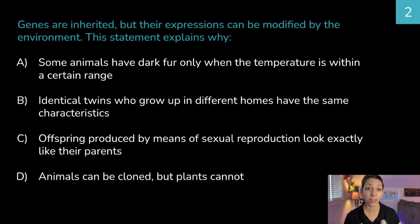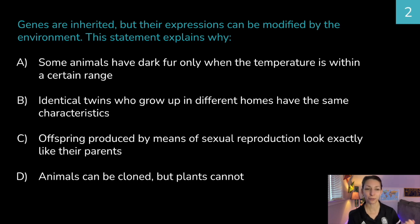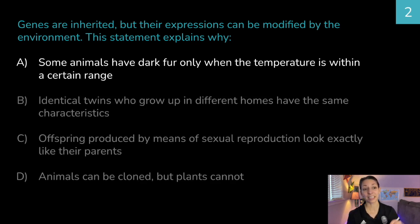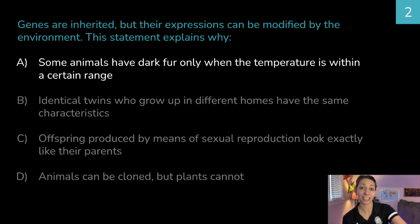Question 2: genes are inherited, but their expressions can be modified by the environment. This statement best explains why — A: some animals have dark fur only when the temperature is within a certain range; B: identical twins who grow up in different homes have the same characteristics; C: offspring produced by sexual reproduction look exactly like their parents; or D: animals can be cloned but plants cannot. The correct answer is A: some animals have dark fur only when the temperature is within a certain range — again, that's the environment influencing the expression of those genes.